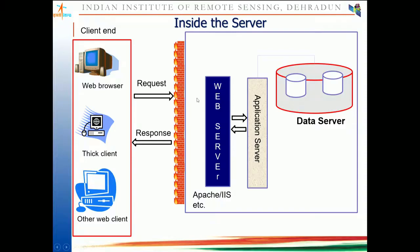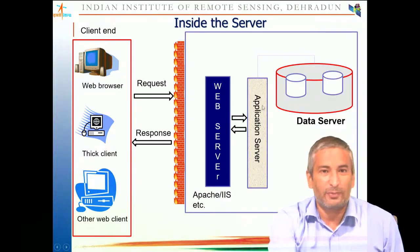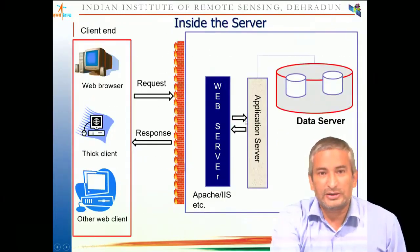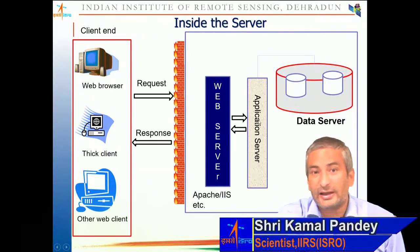For example, a login request contains your username and password. This needs to be processed — it will check whether that combination exists. For that we deploy one application server. The application server does the processing by fetching data from the data server, where all your datasets are stored. If you have a business application, your application server might be PHP-based or Angular-based. But if you have a GIS-based application, your application server should be a GIS server.